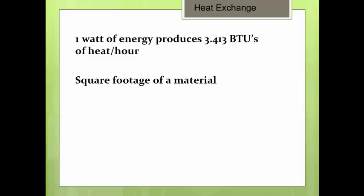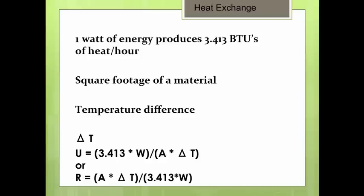Then there's the area in square feet of the material that we're testing, and finally the temperature difference on each side of the material. Knowing that, we can calculate delta T, put it all together in the UA formula, and we can calculate the U-factor and R-value of a particular material.